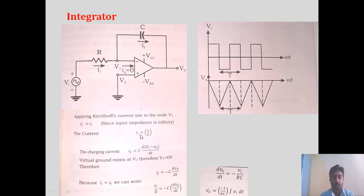Now we need to equate these two expressions, I1 and IF. The current flowing through the resistor will flow through the capacitor because current into the op-amp is 0. So whatever the amount of current flowing through the resistor will flow through the capacitor — that is why we can equate I1 and IF.